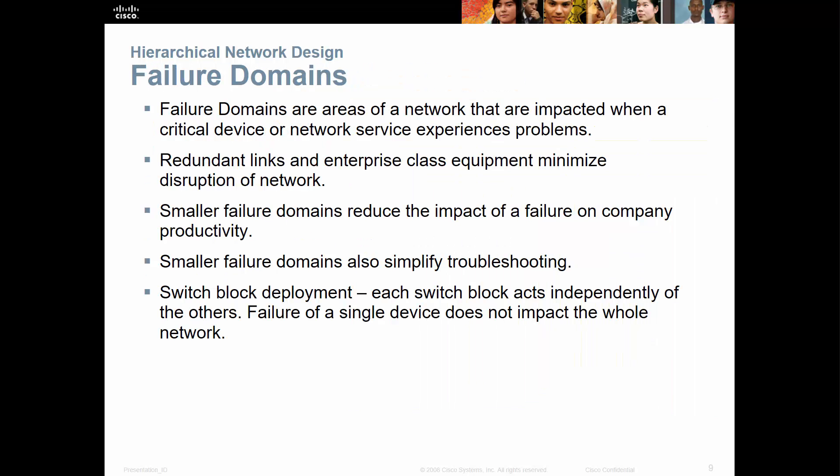We have a few things called failure domains — areas of the network that would directly impact the network when a critical device or service experiences a problem, leading to a failure. You can work on reducing the likelihood of failures with things like redundant links, by doing smaller failure domains. That way they can help reduce or limit the impact of a failure and also make it easier to troubleshoot.